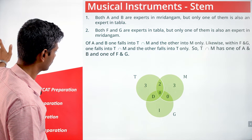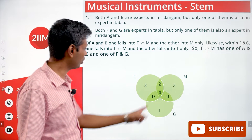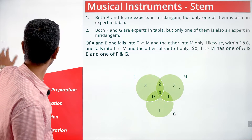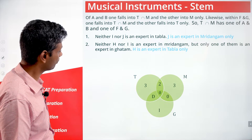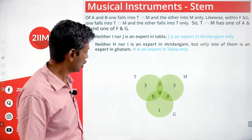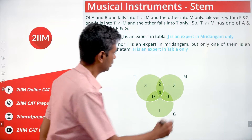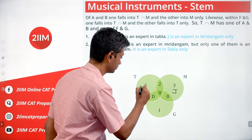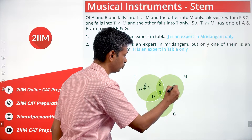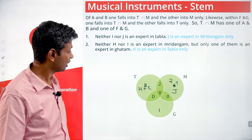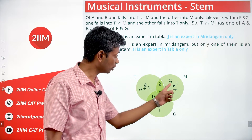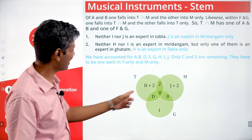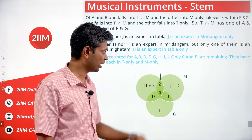One of A or B falls in the Tabla-Mridhangam intersection; the other goes in Mridhangam only. One of F or G falls in the Tabla-Mridhangam intersection; the other goes in Tabla only. So Tabla only has H plus two others, and Mridhangam only has J plus two others.